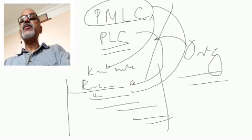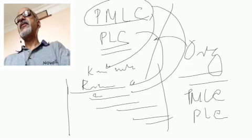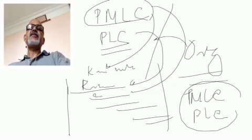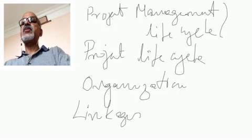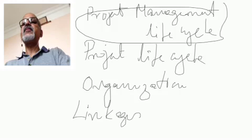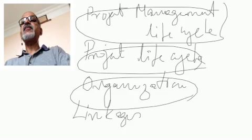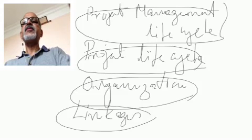A schedule will have activities pertaining to project management lifecycle and project lifecycle, and we need organization support to perform all these things — these are the linkages. To revisit: we covered the project management lifecycle, then the project lifecycle, then how the organization supports these things, and then the linkages. I hope this throws more clarity into these concepts.